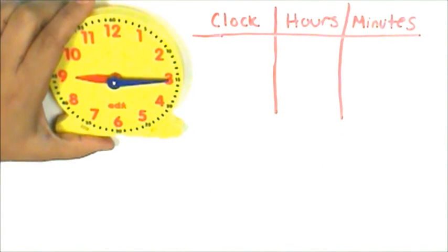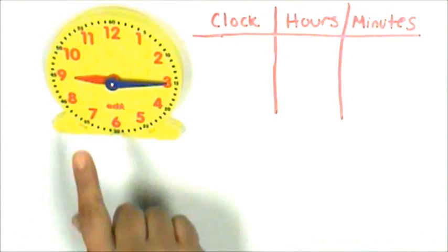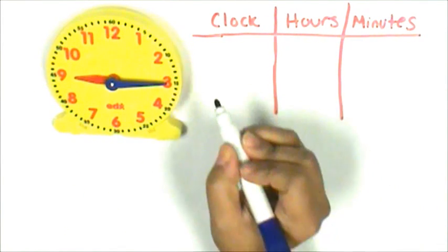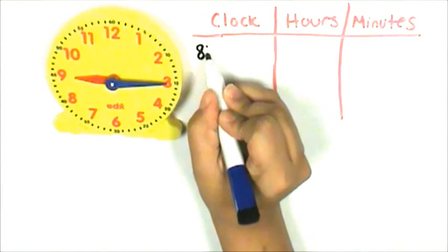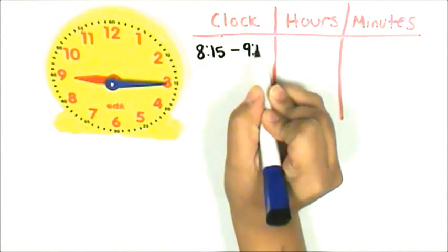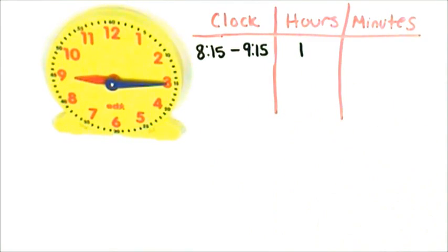I moved the minute hand 60 minutes or one hour. My hour hand moved from 8 to 9. My new time is 9:15. From 8:15 to 9:15 was one hour. Practice finished at 10:22 so we're not done yet.